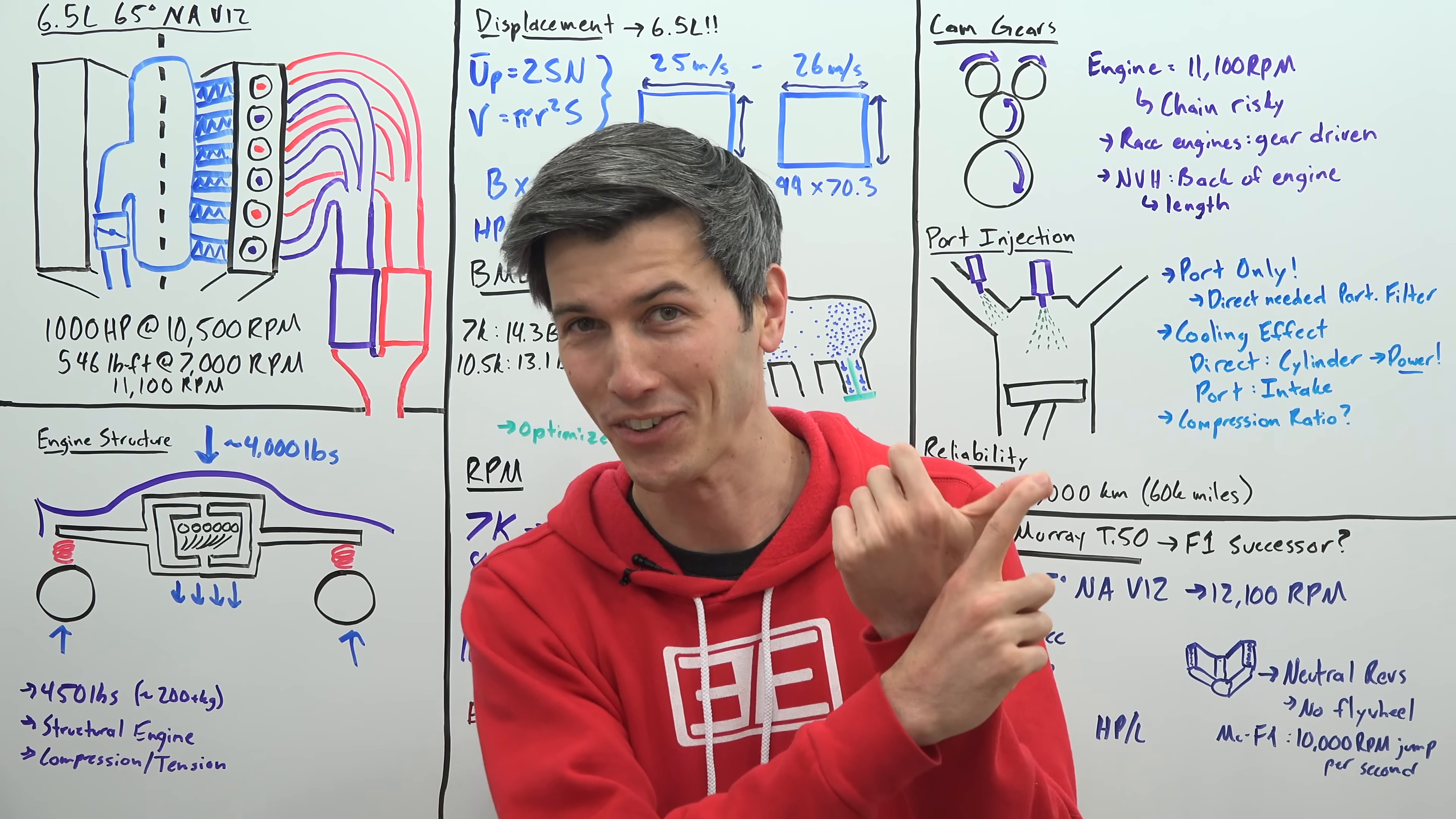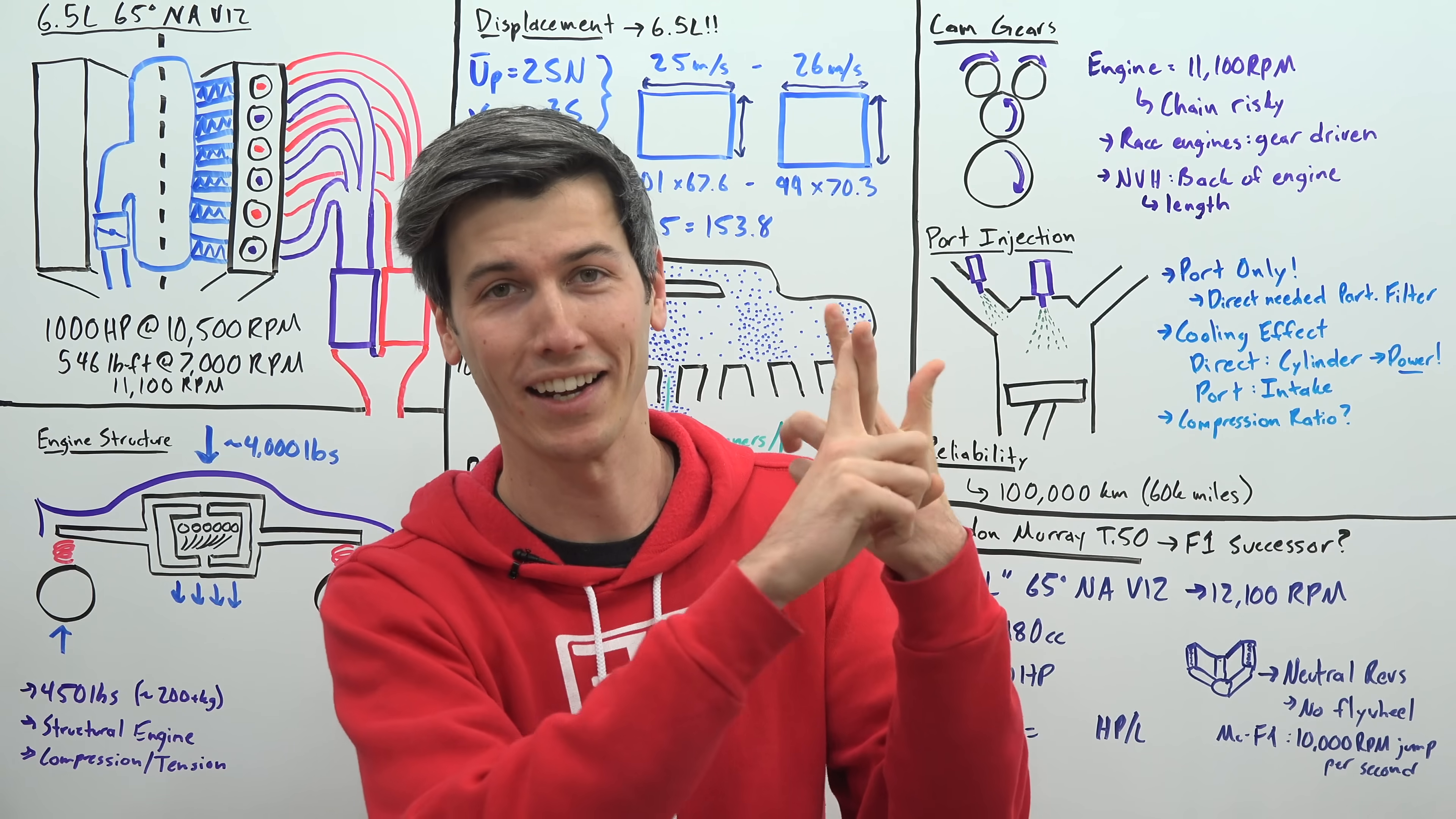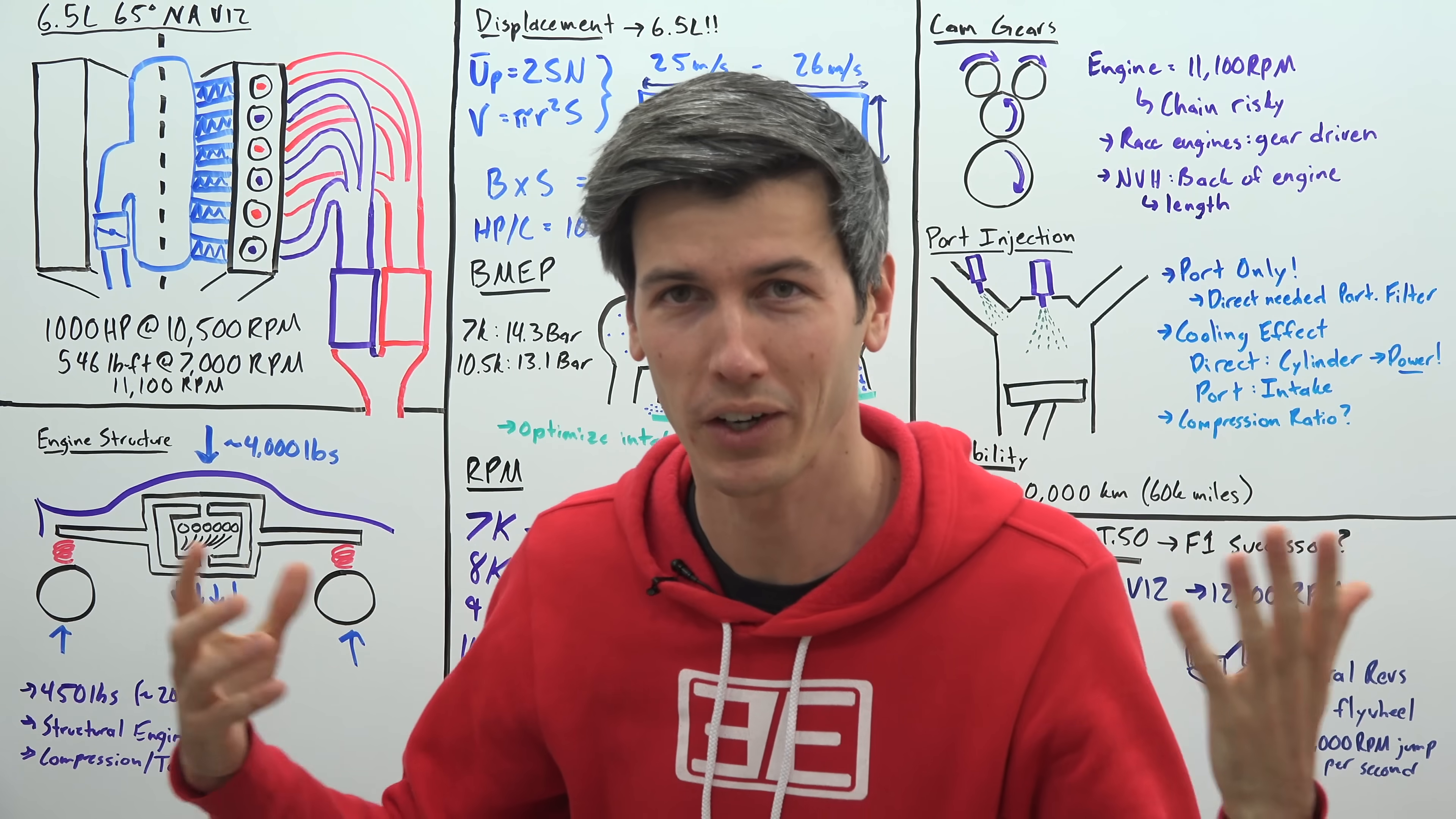Now both of these engines are naturally aspirated, both of these engines are V12s, they're both at a 65 degree angle, they both rev well past 10,000 rpm and they're both made by Cosworth.